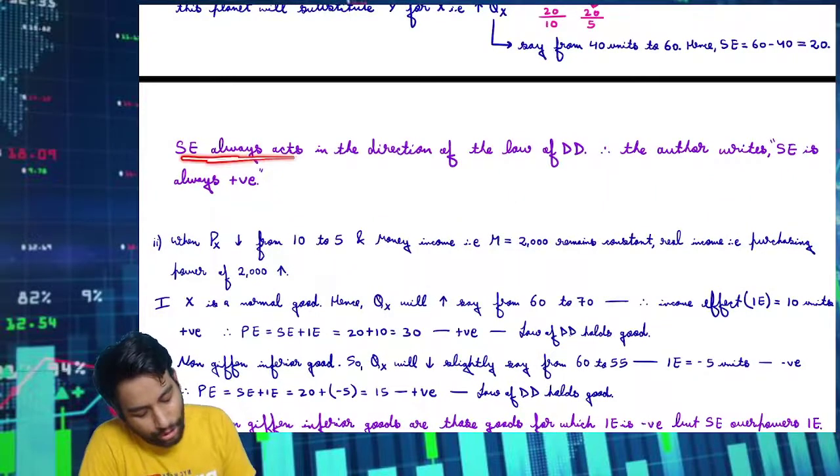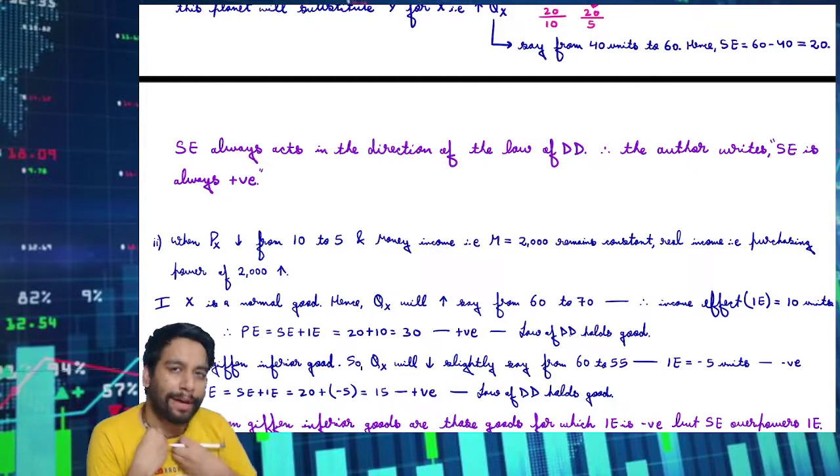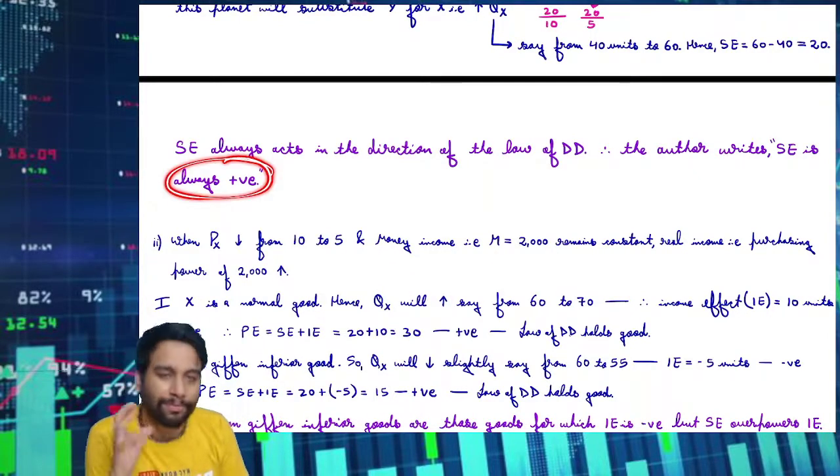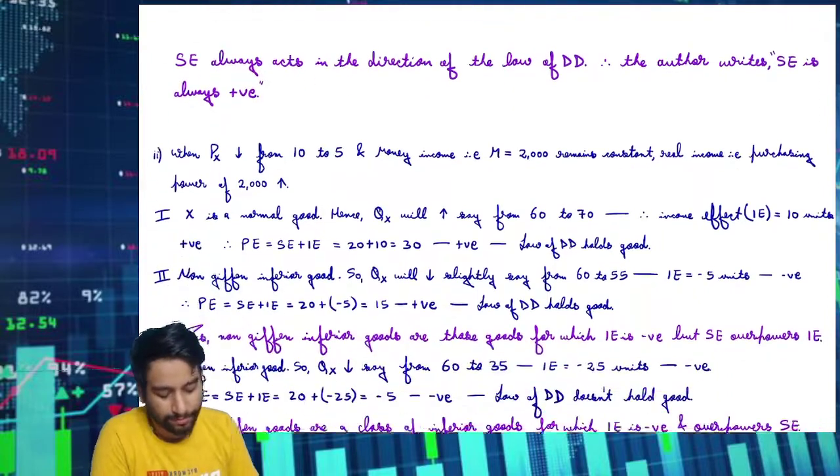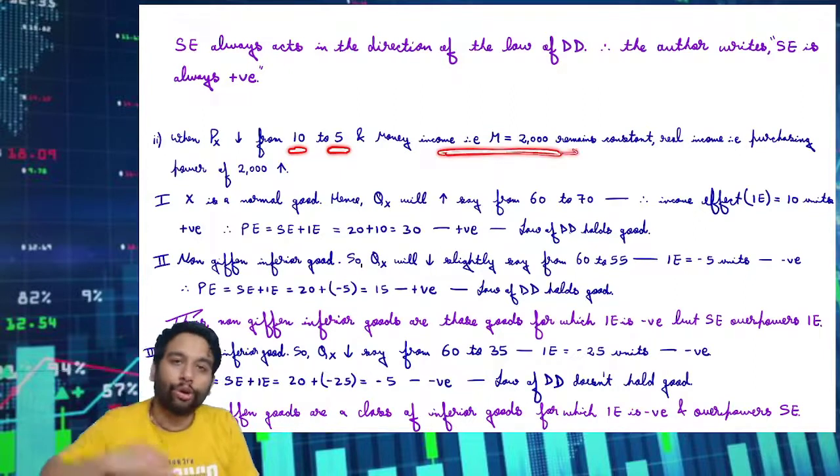Substitution effect is always in the direction of the law of demand. This is always positive. When price goes from 10 to 5, my income is constant.